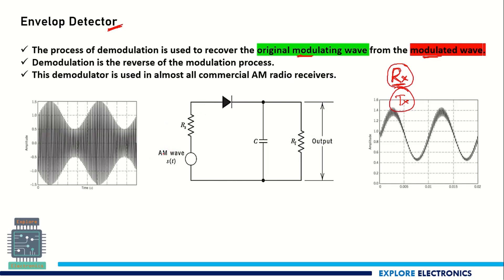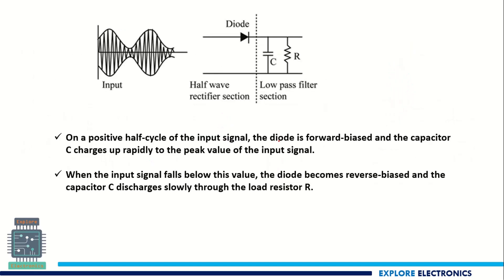This is the circuit of the envelope detector. Here we are going to give the AM wave as input. This RS is the current limiting resistor to the circuit and we have a diode here and an RC circuit. This RC circuit will act as a low pass filter and this diode acts as a half wave rectifier. So in this circuit you can see, this is the half wave rectifier section and the second half of the circuit is a low pass filter.